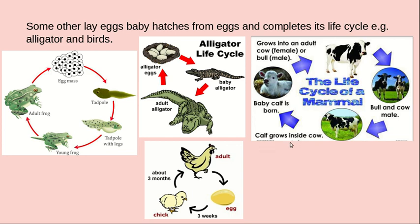A cow's baby, known as a calf, grows inside the cow's body. Then the baby calf is born, grows, and transforms into an adult female cow or a bull. This completes the cow's life cycle.